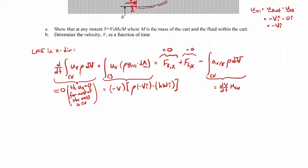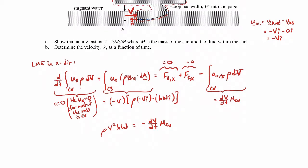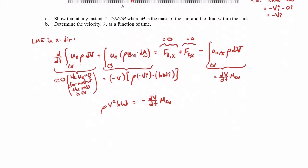We have everything needed for the linear momentum equation. Simplifying: the left-hand side gives positive rho v² h times w, and the right-hand side gives minus dv/dt times the mass inside the control volume. The mass inside is changing with time, so we need to figure out how it changes. We'll apply conservation of mass to the same control volume to determine that.